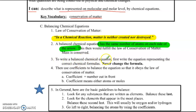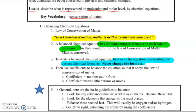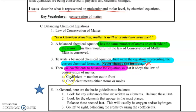In order to write a balanced chemical equation, you first write the equation representing the correct formula. Never change the formula — you cannot ever, ever, ever change the formula. Circle this, put a star by it, highlight it, underline it. You can never change the formula.